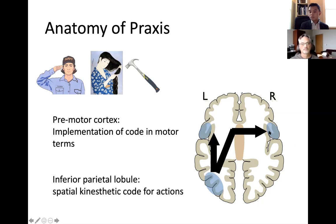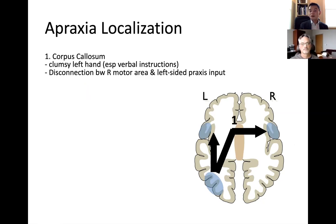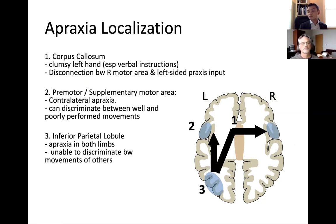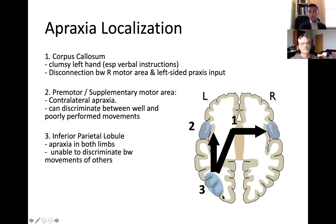The easiest way to think about it is: what could possibly go wrong? Working backwards — for lesion number three, the inferior parietal lobule is the sheet music for apraxia. If you have a lesion there, that's the whole kit and caboodle gone. They can't recognize when you're doing something incorrectly, and they can't perform any of the motions with either hand, because all the programming is now gone.